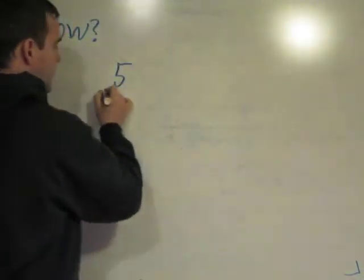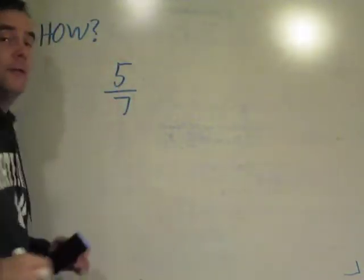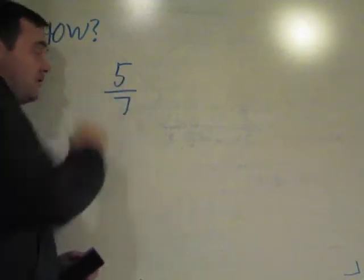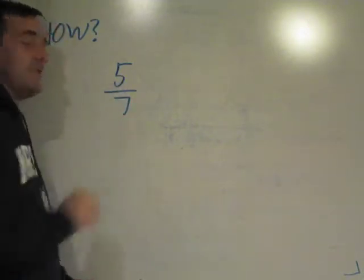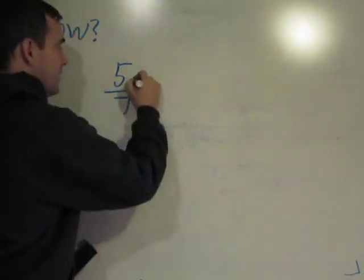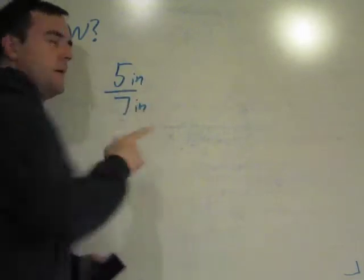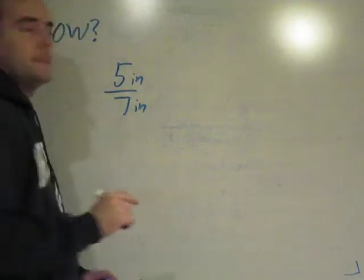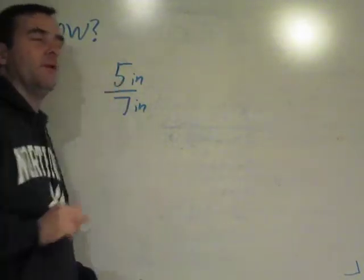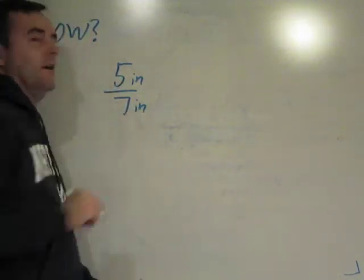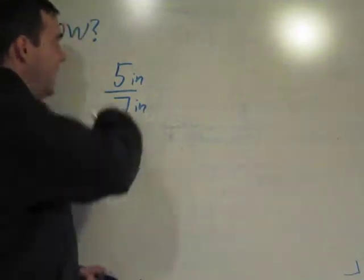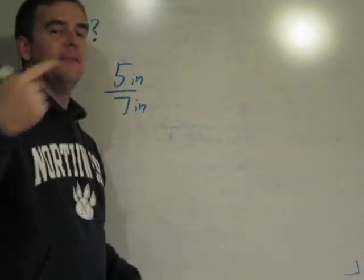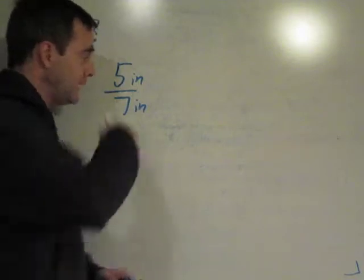Ratios show how one thing compares to another. This thing is five-somethings. This thing is seven-somethings. Let's say it's inches and inches. Maybe you recognize that. That's a pretty standard size for a photograph. The side length of the photograph is five inches. The width of the photograph is seven inches. That's how the width and the length of the photograph relate to each other.